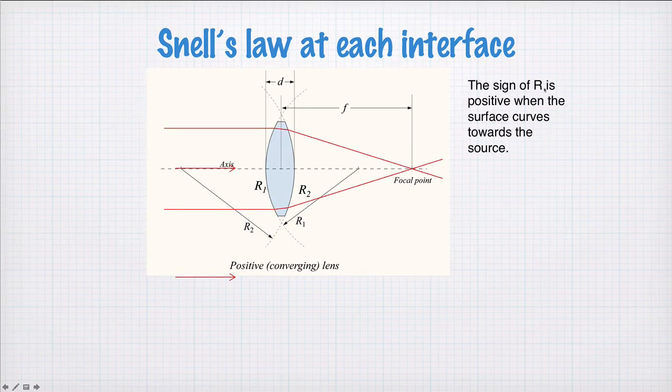We need some conventions. We say that the sign of r, that is the radius of curvature, is positive when the surface is bending or curving towards the source. So, this side here with r1 is bending towards the source, the source is over here, so r1 is positive.